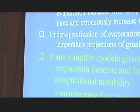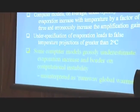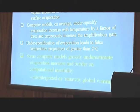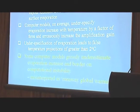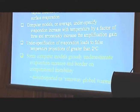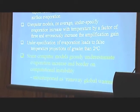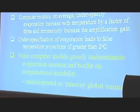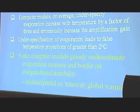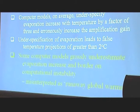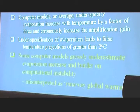Some computer models grossly underestimate the evaporation — almost no increase at all — and they border on computational instability. That value of R is approaching one, and so their model is getting warmer and warmer and warmer, and they say this is runaway global warming. Somebody who knows a bit more about it might say it's computational instability on the verge of it. So we're getting the misinterpretation of even what the GCMs are saying.